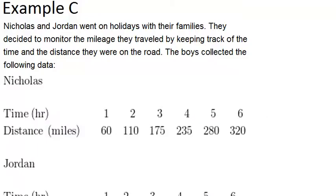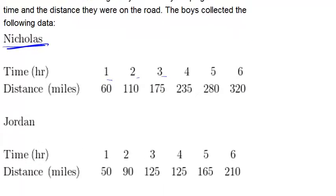Now let's go to example C where we'll actually practice making a double line graph. Nicholas and Jordan went on holidays with their families. They decided to monitor the mileage they traveled by keeping track of the time and distance they were on the road. The boys collected the following data. So we have Nicholas at each time which is a different hour how far he's gone and below that we have similar data for Jordan.